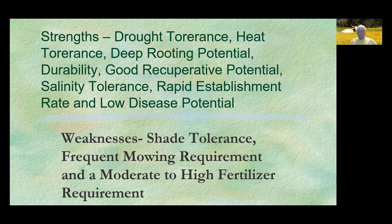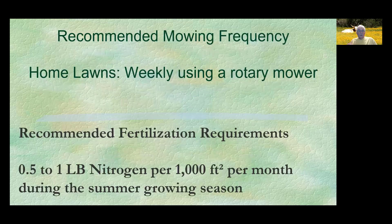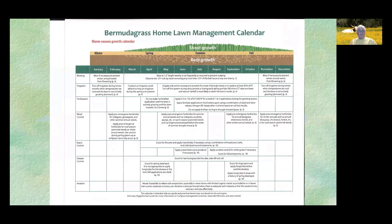Bermuda grass weaknesses: it will not handle shade very well, you have to mow it frequently, and it has a moderate to high fertilizer requirement. Recommended mowing frequency for home lawns is usually weekly using a rotary mower. Recommended fertilization is one-half to one pound of nitrogen per 1,000 square feet per month during the summer growing season.